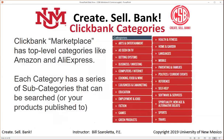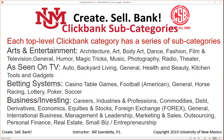The ClickBank marketplace is a tremendous resource for finding products to promote that match your interests. It has top-level categories, just like Amazon and AliExpress, and each category has subcategories you can search or publish your products to. They range from arts and entertainment — including architecture, art, body art, dance, fashion, film and television, humor, magic tricks, music, photography, radio, and theater — all the way through sports and travel.